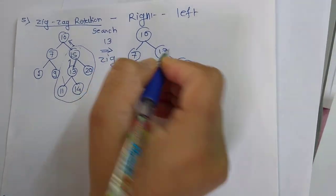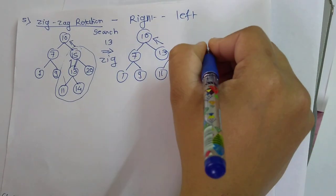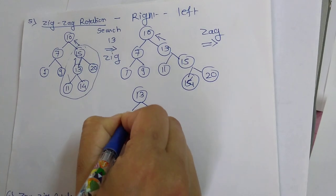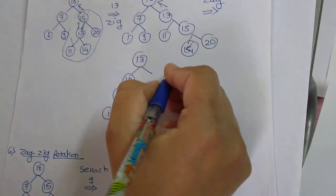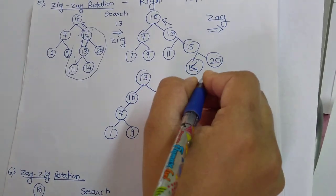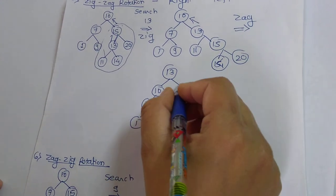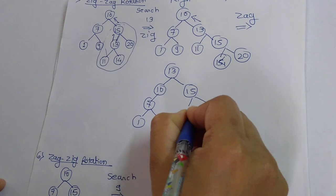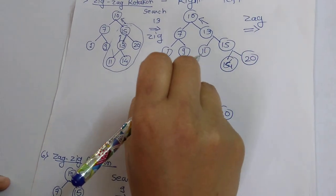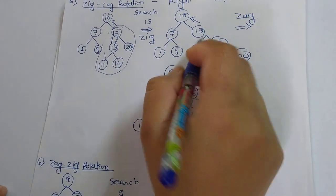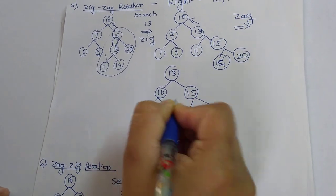After the first zig operation, the position of 15 and 13 are set. Now performing the second zig rotation — which is actually a left rotation (zag). 13 will be the root. 10 goes to the left of 13, with 7 and its subtree (1 and 9) as is. For the right subtree: 15 is the right child of 13, having two children 14 and 20. The position of 11 is the left child of 13 but right child of 10. This is the zig-zag rotation.